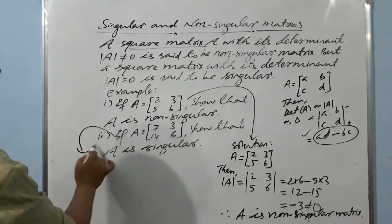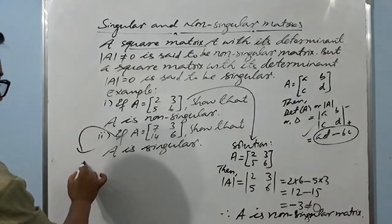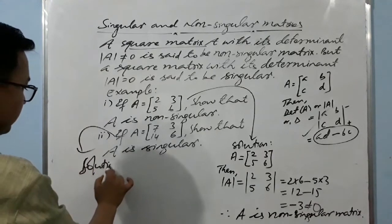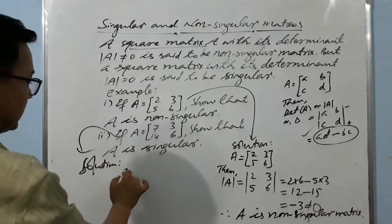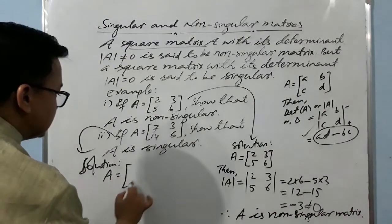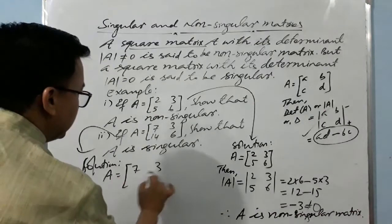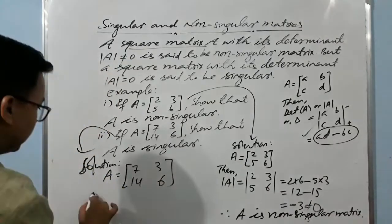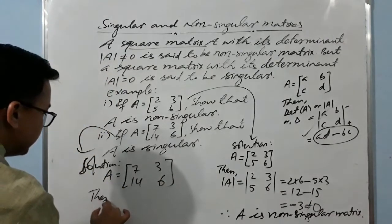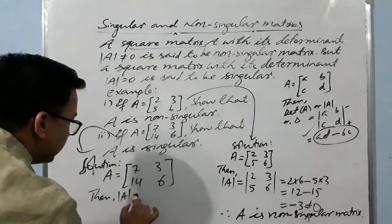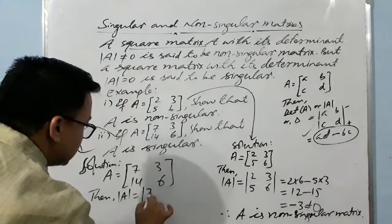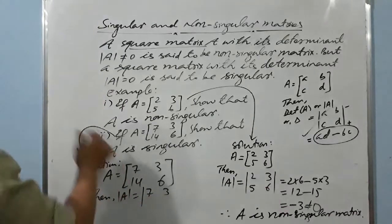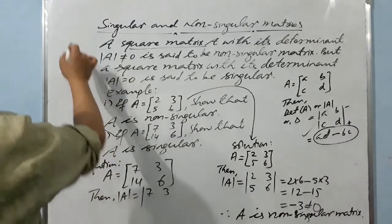Now let me also clarify a common mistake students make. When finding the determinant, some students write the modulus sign around the result — for example, writing |13| — and still treat those vertical bars as a modulus sign. Never use this sign to mean the modulus of a real number. The vertical bars here denote the determinant of a square matrix, not the modulus.